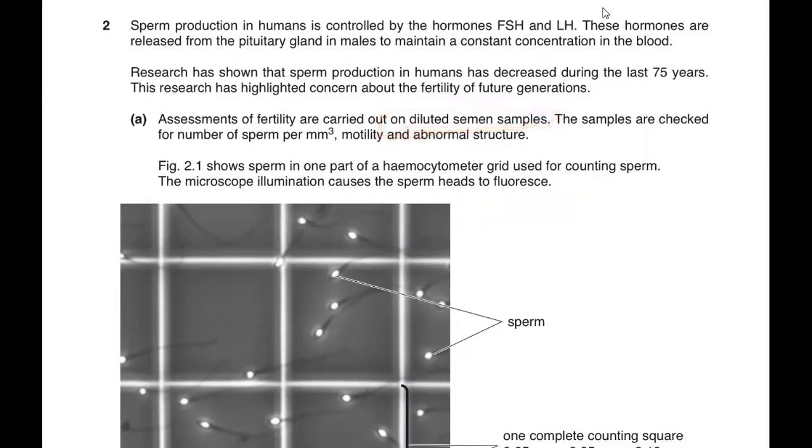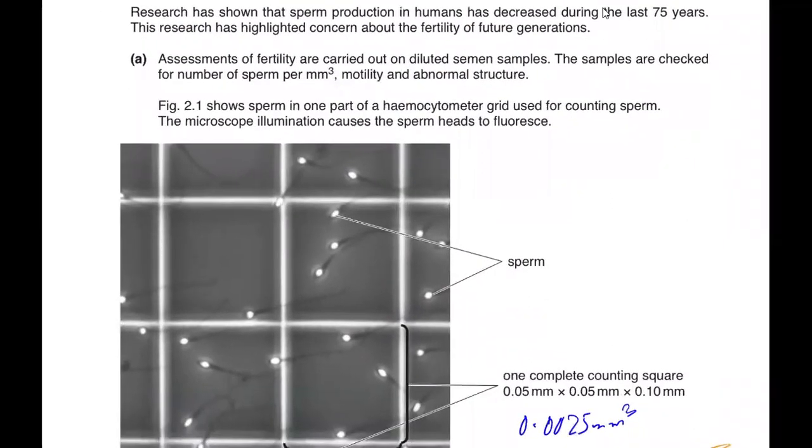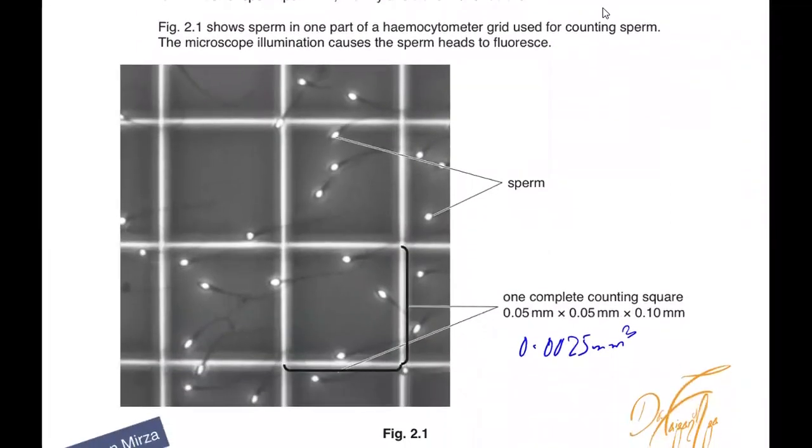Assessments of fertility are carried out on diluted semen samples. The semen, which is already a liquid sample, is further diluted. These samples are checked for sperm per mm cube, motility, and abnormal structure. You're counting the number of sperm, checking their motility, and noting whether the sperm features are abnormal or normal. Figure 2.1 shows sperm in one part of the hemocytometer grid used for counting. The microscope illumination causes the sperm heads to fluoresce.